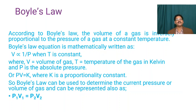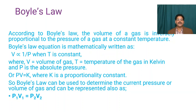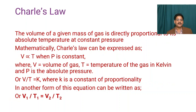First is Boyle's Law. According to Boyle's Law, the volume of a gas is inversely proportional to the pressure of the gas at constant temperature. Mathematically, this is represented as V ∝ 1/P when T is constant, where V is the volume of gas, T is the temperature in Kelvin, and P is the absolute pressure. It may also be written as PV = k, where k is a proportionality constant, or as P₁V₁ = P₂V₂, allowing any unknown value to be calculated.